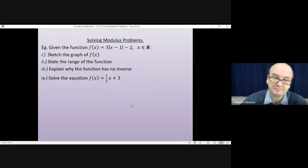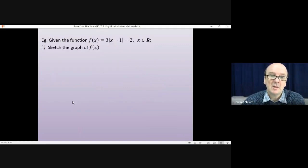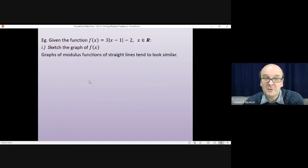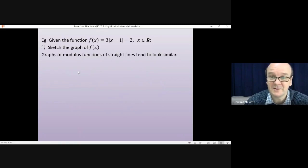Okay, we'll go through this together. So we're given a function, 3 times the modulus of x minus 1, take away 2. We're asked to sketch the function, state the range of the function, explain why it has no inverse, and then solve a particular equation. Sketching the graph of f(x) first of all. Now, if you have the textbook, they do use a different method for sketching the graph than I'm doing here. They use a method which really looks at transformations and combining transformations together, whereas the method I'm choosing to use here is working from first principles.